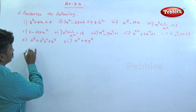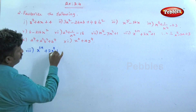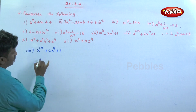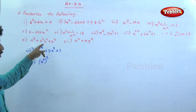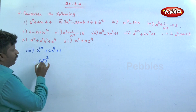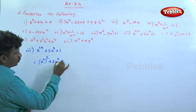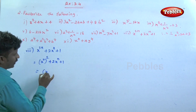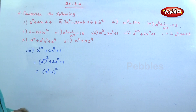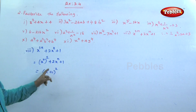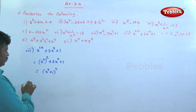Question number eight: x to the power 2n plus 2x to the power n plus 1. This can be written as x to the power n whole square plus 2 into x to the power n into 1 plus 1 squared, which is x to the power n plus 1 whole square. Using a plus b whole square: a squared plus 2ab plus b squared.